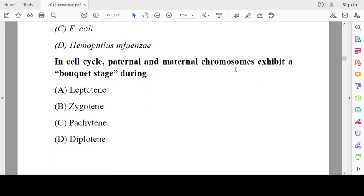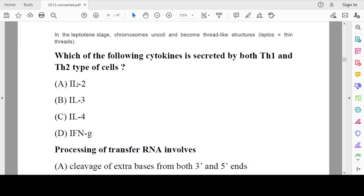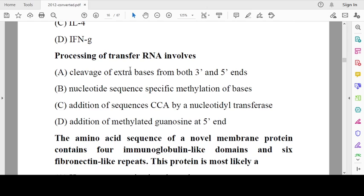In the cell cycle, paternal and maternal chromosomes exhibit bivalent stage during leptotene stage. In leptotene stage, chromosomes uncoil and become thread-like structures. Each type of cytokine is secreted by both Th1 and Th2 cells: IL-3, interleukin-3. If you take a textbook, you can find a table column. Processing of transfer RNA involves cleavage of extra bases from both the 3' and 5' ends.